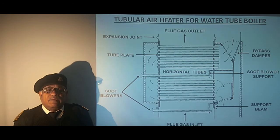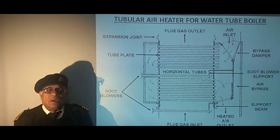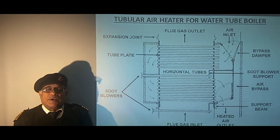We have flue gas inlet from the bottom and it leaves from the top. Similarly we have combustion air entering from the top and if required we can bypass it as shown here in the bypass passage. And finally it leaves into the boiler to the burner.